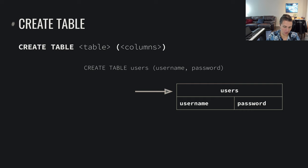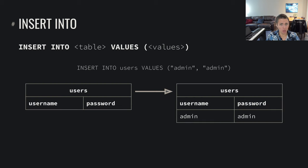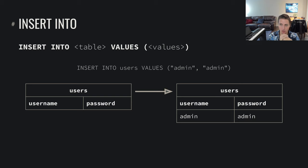Now if we want to add data to that table, we use the Insert Into function — Insert Into some table name, Values, then specify the values in order of the columns. For example, to insert an admin user, we run Insert Into Users, Values, 'admin', 'admin'. Note the double quotes here, or you could use single quotes, as we're inserting string values. Suddenly we have a user concept backed by data, where one user is admin with username admin and password admin.